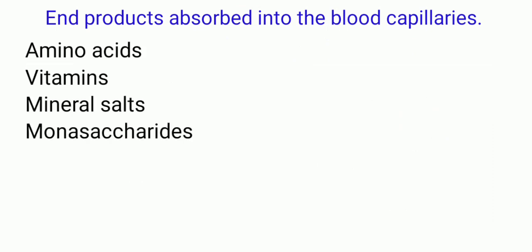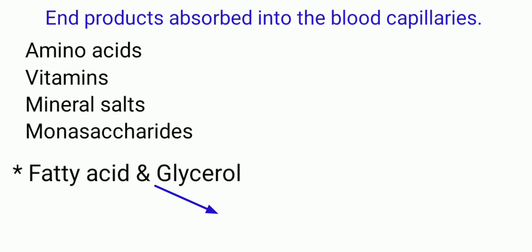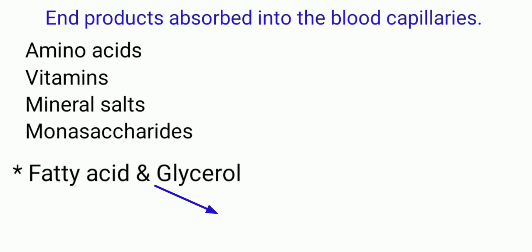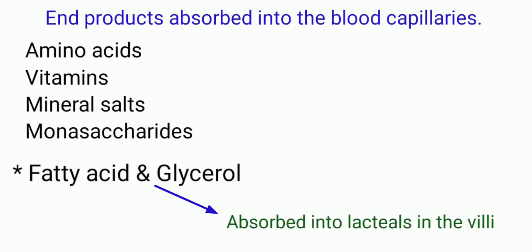The digestive end products — amino acids, vitamins, minerals, and monosaccharides — are absorbed into the blood capillaries of the villi. Fatty acids and glycerol pass through the villi walls into the lacteals, which belong to the lymphatic system. They then pass into the main lymphatic system, which eventually discharges them into the blood.